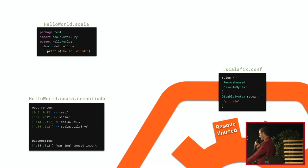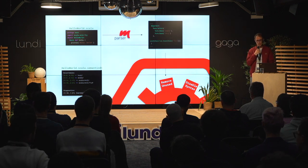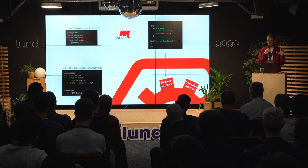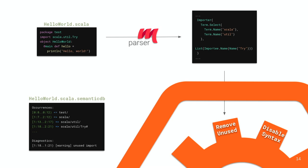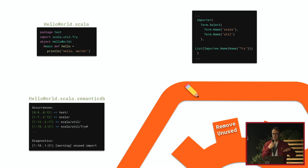First, we parse the source file to generate an abstract syntax tree — it's quite large even for a small source file. This parsing is done only once for all rules. RemoveUnused needs information from SemanticDB to know what is actually used, so it merges information from the AST and the SemanticDB file. What it generates is a rewrite — symbolized by a pen — that will be applied later.